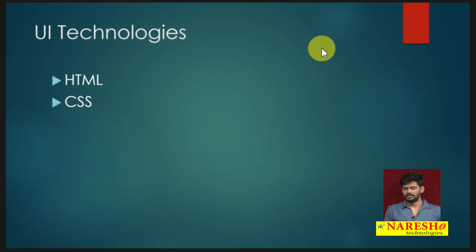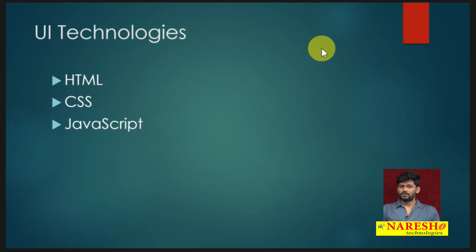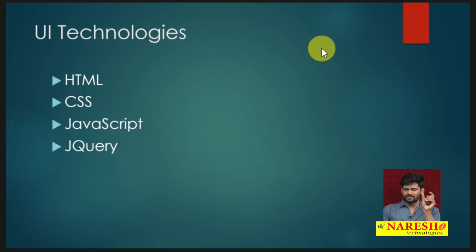How to get the dynamic nature? That is by using JavaScript. JavaScript is a programming language for browser-side scripting. By using JavaScript, you can add some dynamic nature to your website. The next one is jQuery — jQuery is a library built on top of JavaScript. If you want to develop a component by using JavaScript, it takes around 100 lines of code. By using jQuery, you just call one method that has the component already implemented, and your work will be done.